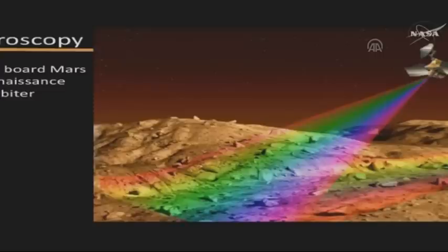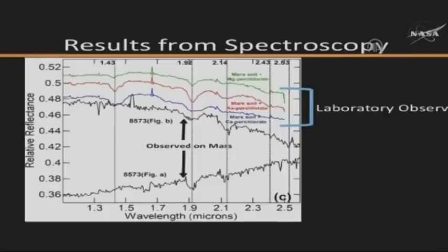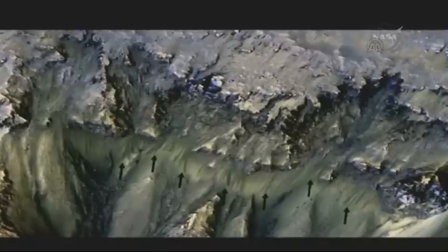Spectroscopy is an excellent tool here — light is being absorbed at about 2.14 microns wavelength. You can see arrows pointing to some faded streaks coming out of the crater wall.